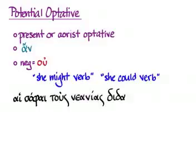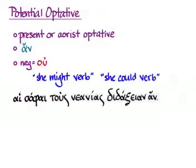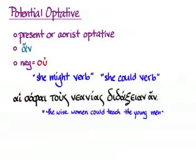Here's an example: hai sophai tous neanias didaxeian an. There's no introductory word; we have an aorist optative and the particle an. That tells us this is a potential optative, not an optative of wish. The translation is 'the wise women could teach the young men' — it's possible that they will; they've got the potential to do that.